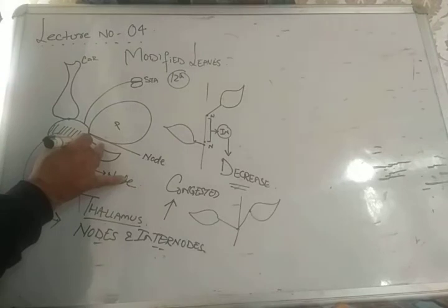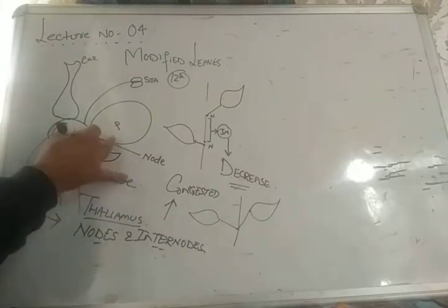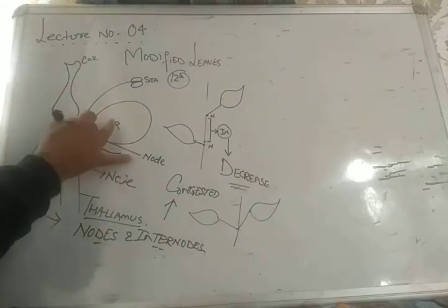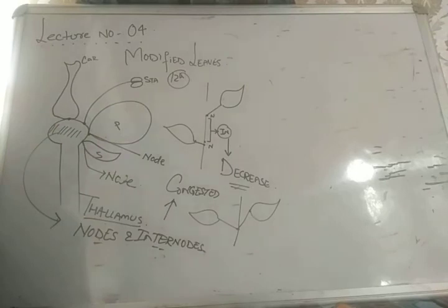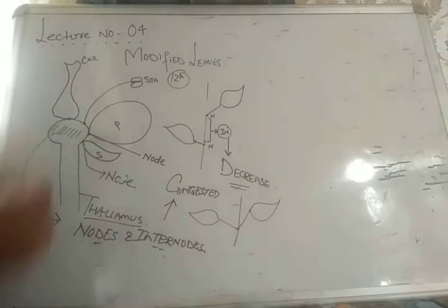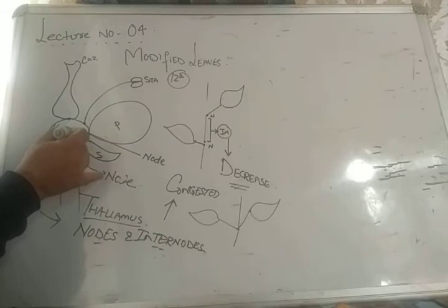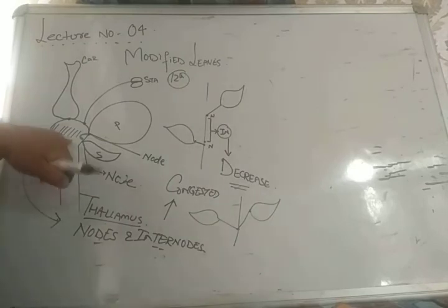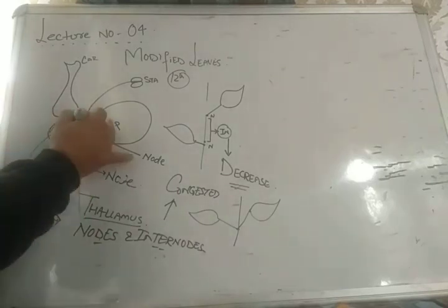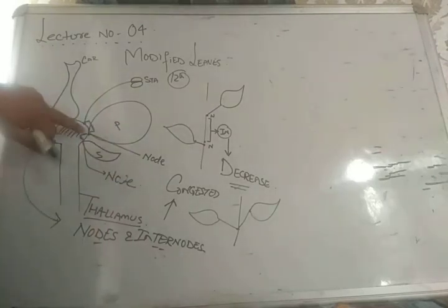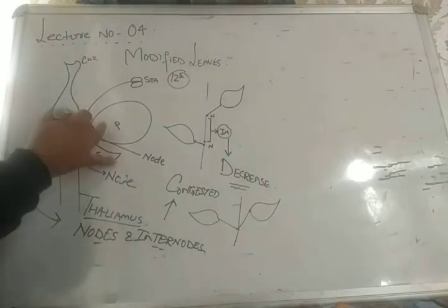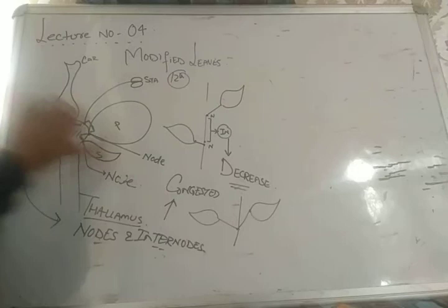For example, the sepal is present at one node, petal at the second node, stamen at the third node, and carpel at the fourth node. The space between sepal and petal is an internode, the space between petal and stamen is an internode, and the space between stamen and carpel is also an internode — but I have drawn them slightly spaced out in the diagram for clarity.